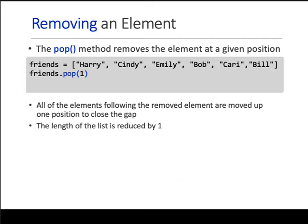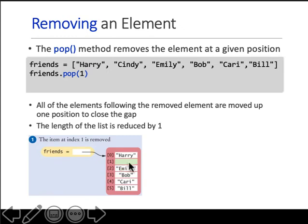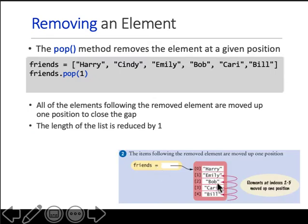To remove an element, you use the pop function. You say list name dot pop that index. So what is index 1? Cindy. When you pop it, Cindy is gone. What happens to the list? As with insertion, this goes the other way, so all of them are shifted one space back. The list length is reduced by one.